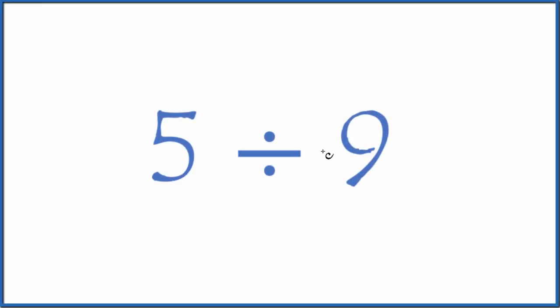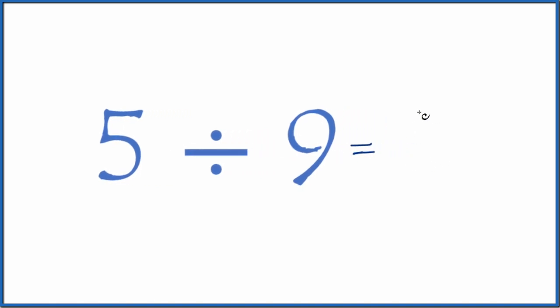If you're asked to divide 5 by 9, there's a few ways to think about it. First off, we could write this as a fraction. We have 5 divided by 9, that's 5 over 9. So 5 divided by 9, you could call that 5 ninths, the fraction.